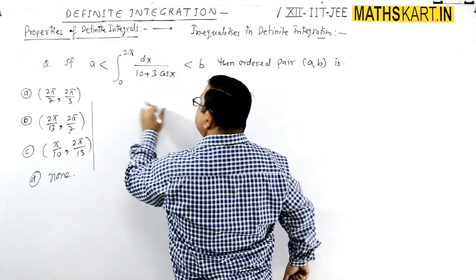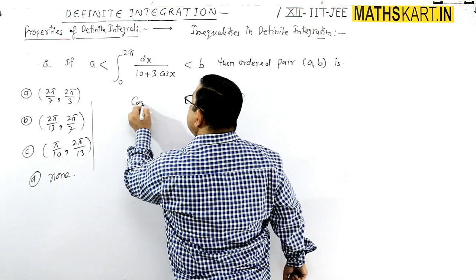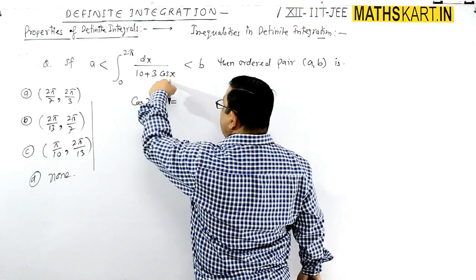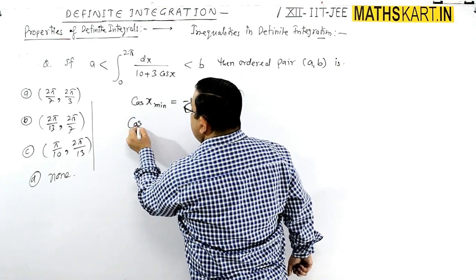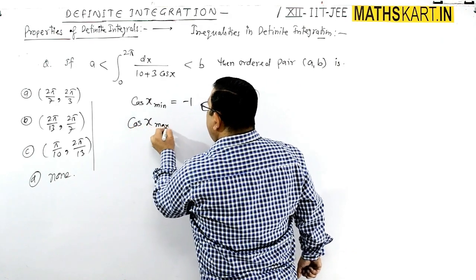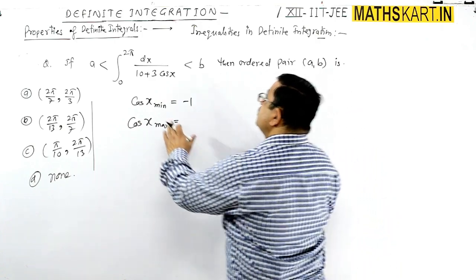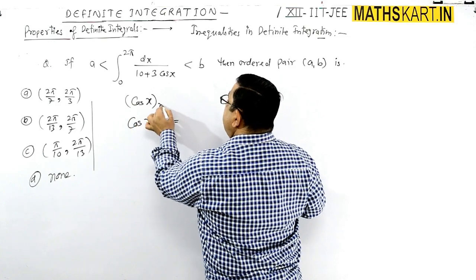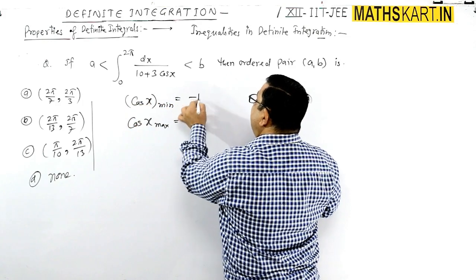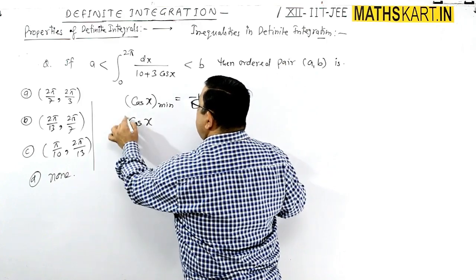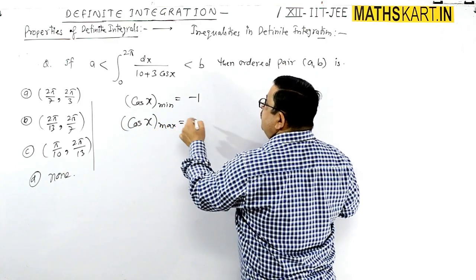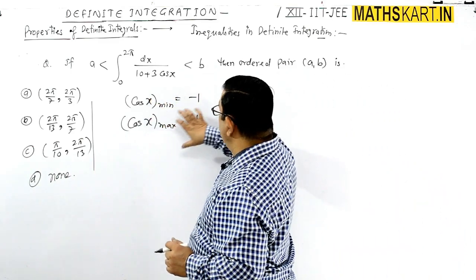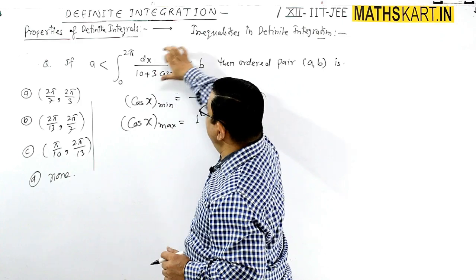Cos x. The minimum value of cos x and the maximum value of cos x is 1. The point is here to control the minimum value. It will continue to ensure the function's maximum value. When I will give the condition here, it will also function.